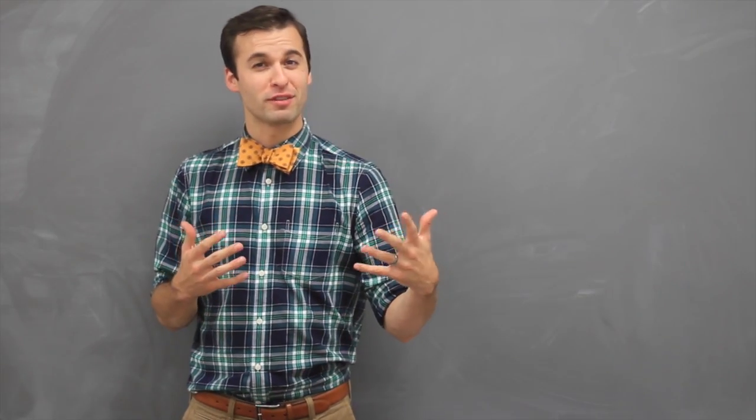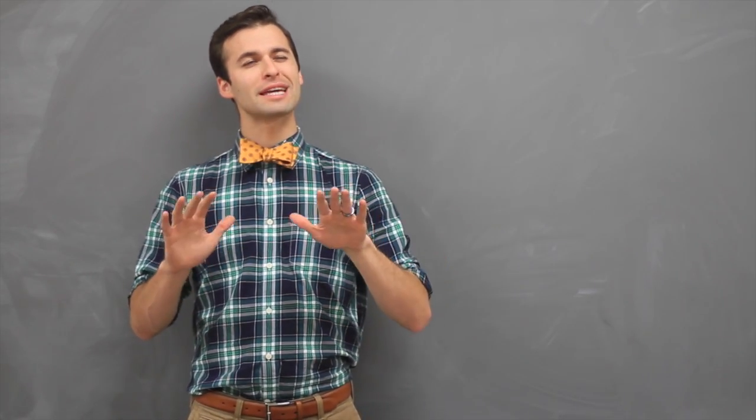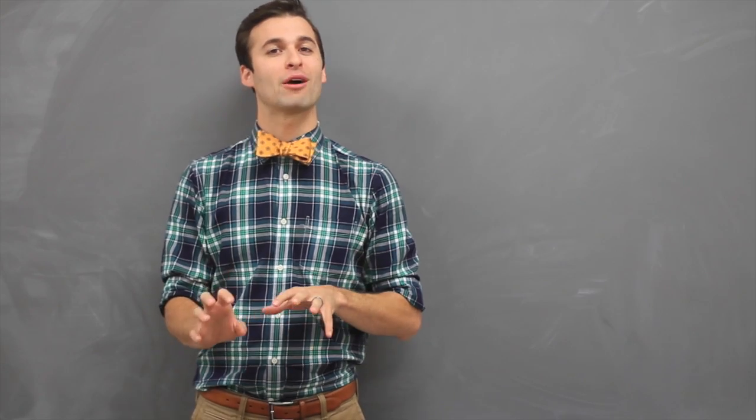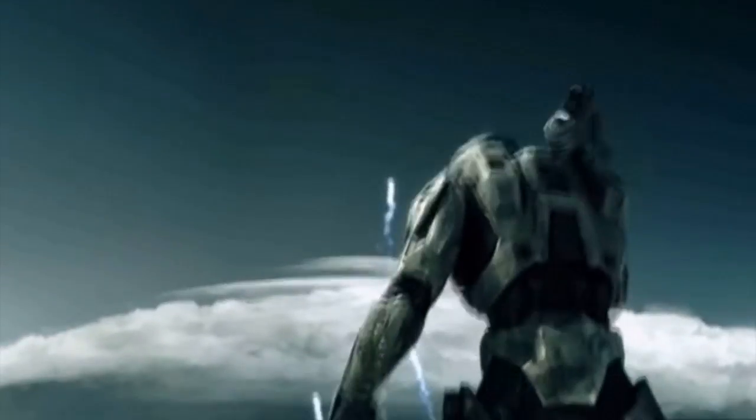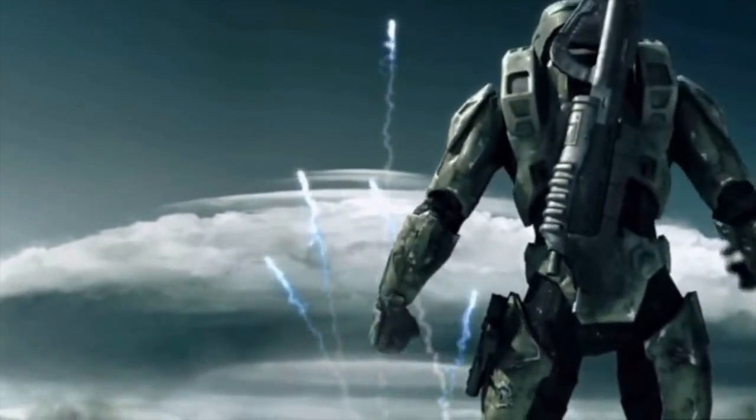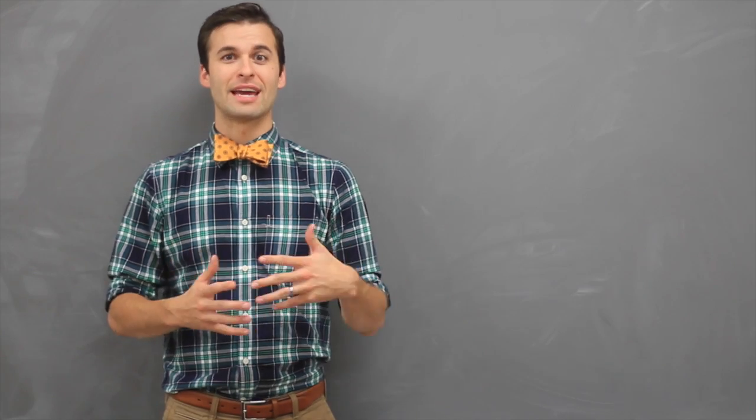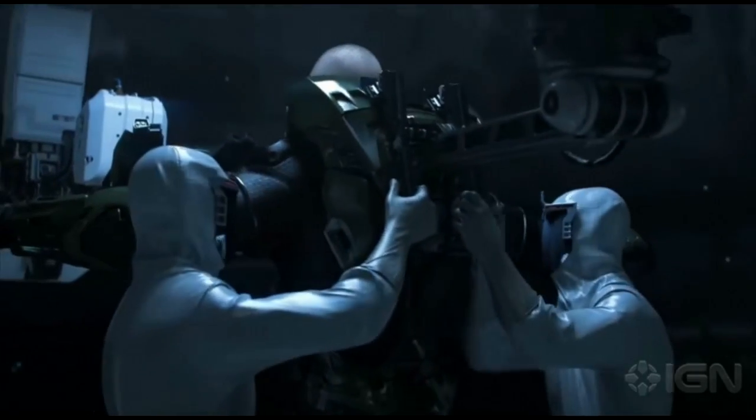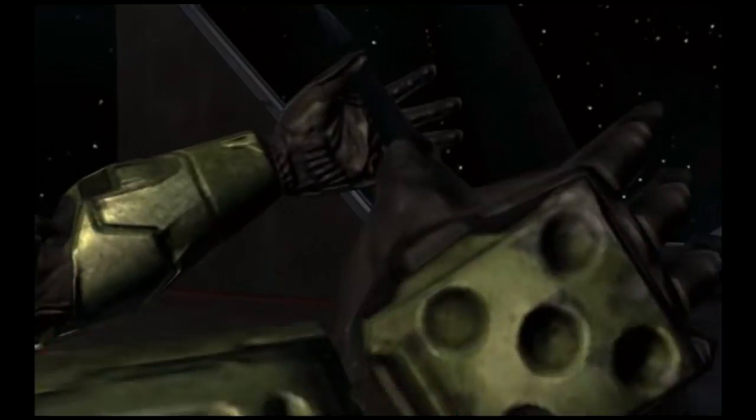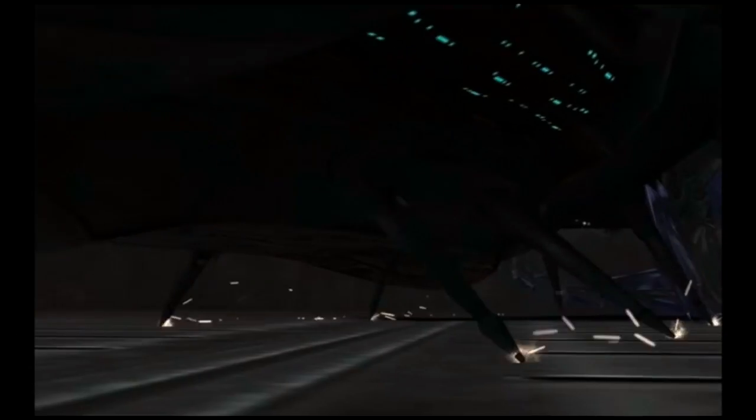So Master Chief is part of the Spartan 2 program, and I won't geek out on you too much about this, but he is basically a genetically modified, super strong, amazingly powerful soldier. Built to fight the insurrectionists, he has crazy armor that makes him crazy strong, and I'd like to analyze how strong that actually makes him.